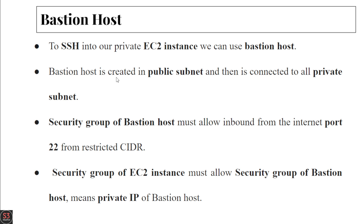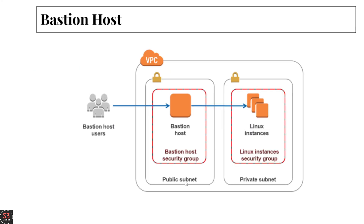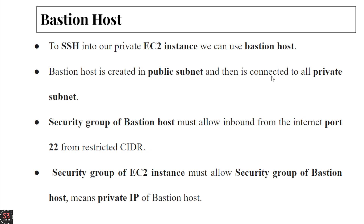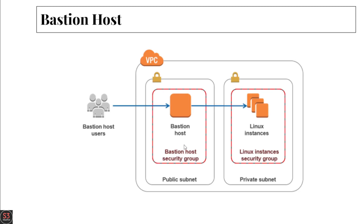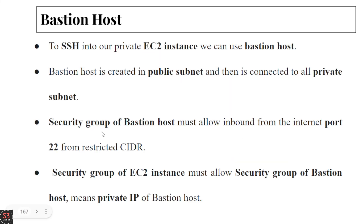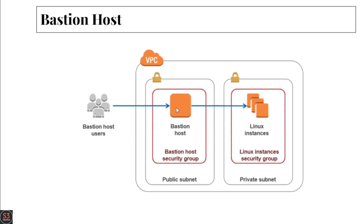The Bastion Host is created in the public subnet, and it is connected to all the private subnets and their Linux private instances. The security group of the Bastion Host must allow inbound SSH from the internet on port 22 from a restricted CIDR. The security group of the EC2 instance must allow the security group of the Bastion Host, meaning the private IP of the Bastion Host.